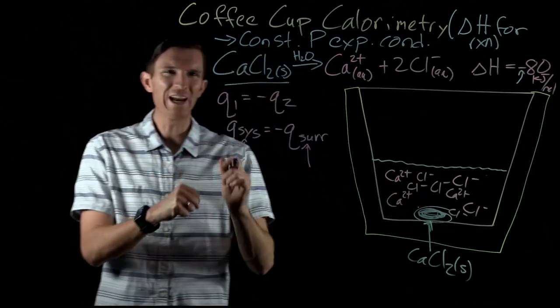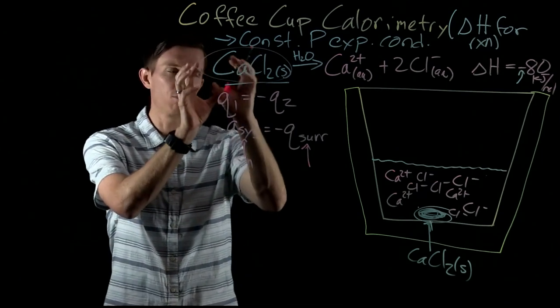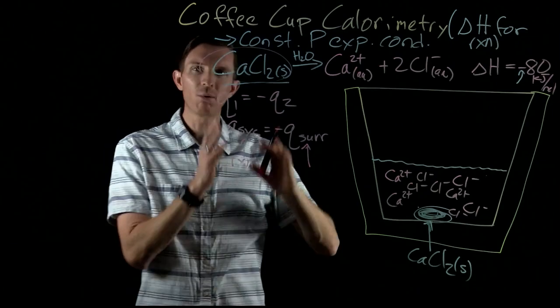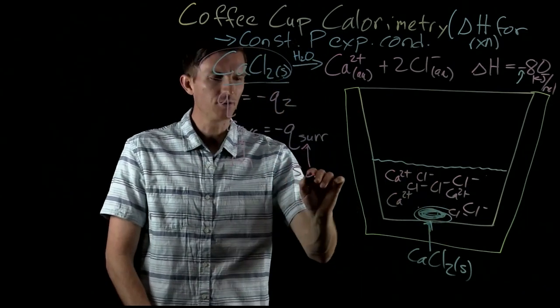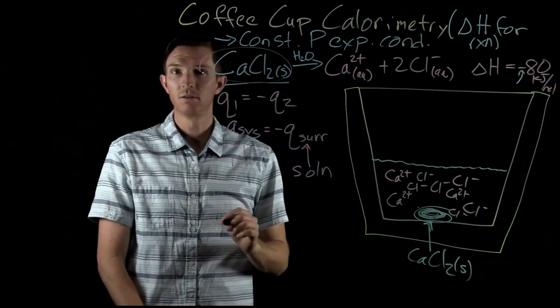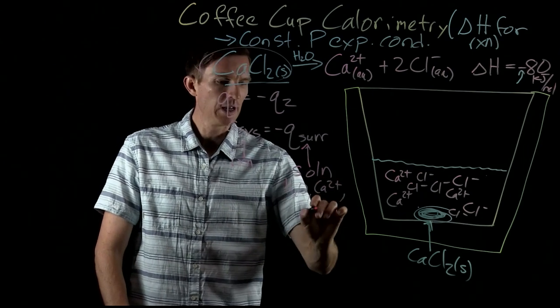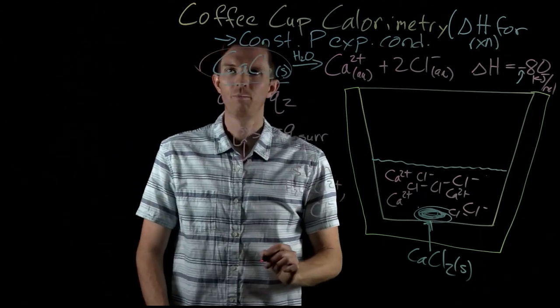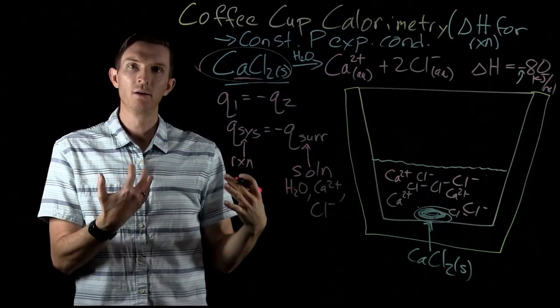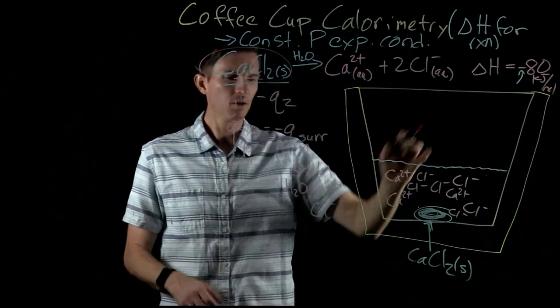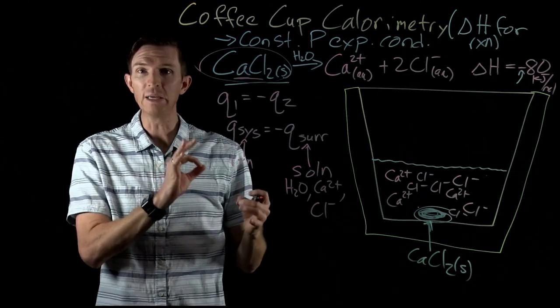So the reaction is not the physical entity of our calcium chloride. The reaction is the process of our calcium chloride becoming calcium chloride ions. So that process of that reaction is happening in my solution, and so my solution is the surroundings. Now this solution would be my water, my calcium ions, and my chloride ions. So now we see it's kind of a weird thing that calcium chloride is part of my system, the reaction here, but then the products, the calcium chloride is also part of my surroundings, the physical pieces.